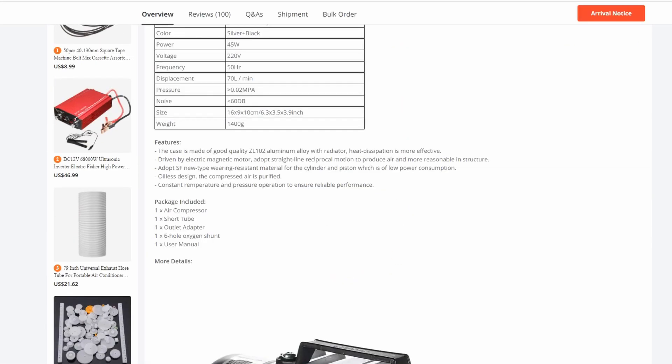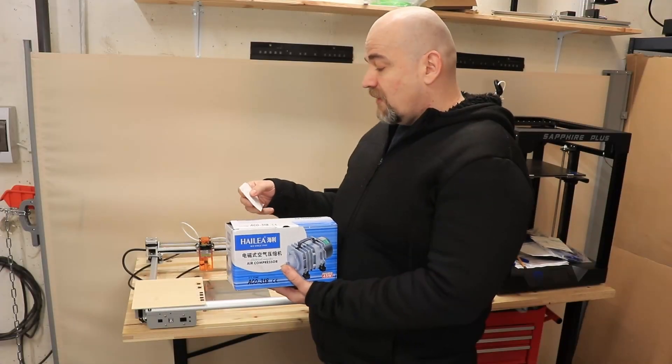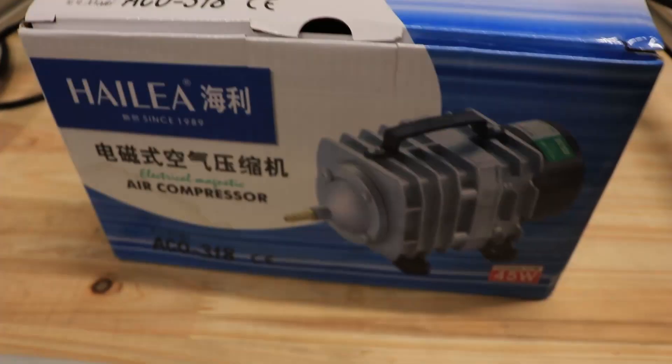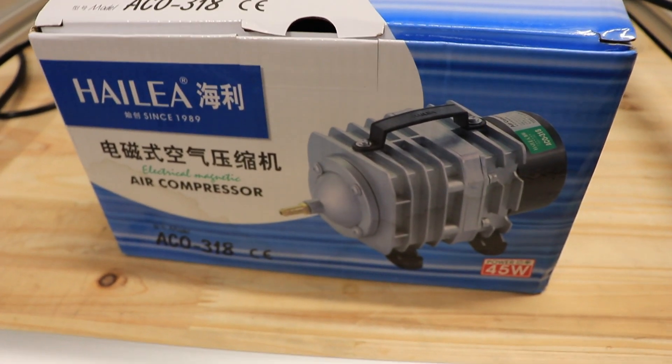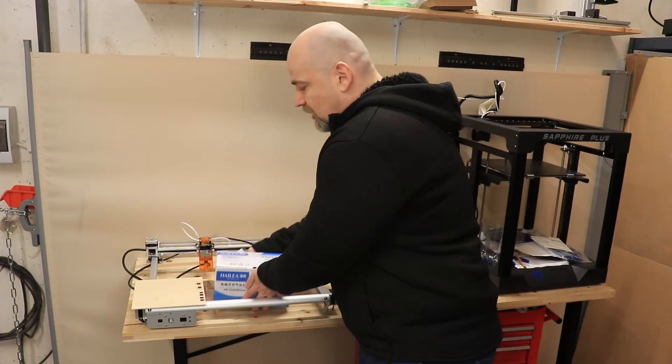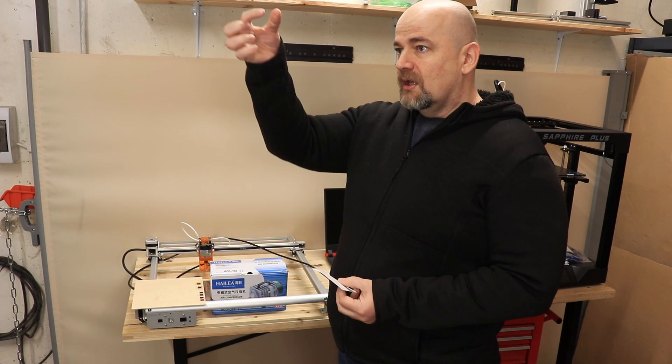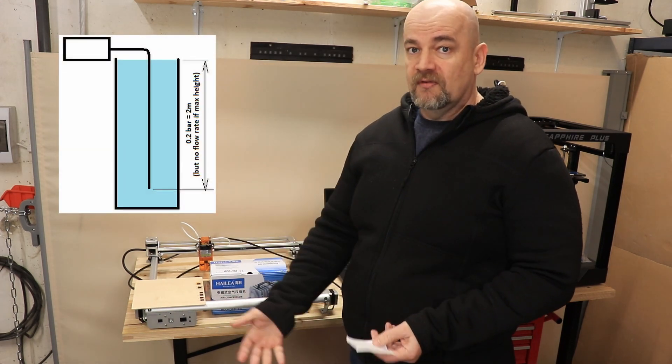So I got one from Banggood. This has the power of 45 watts, the flow rate is 70 liters per minute, and the pressure it can make is 0.02 megapascals, that's 0.2 bars, or if you want to press it into water it will go down two meters deep.